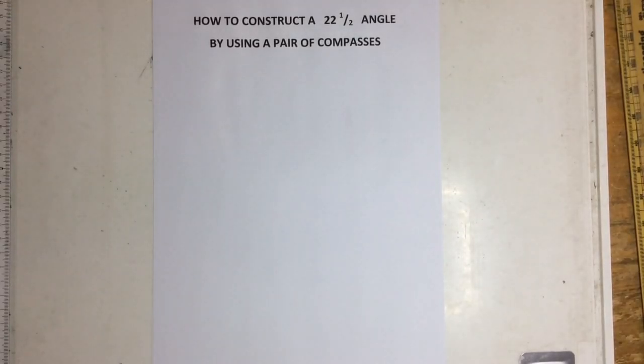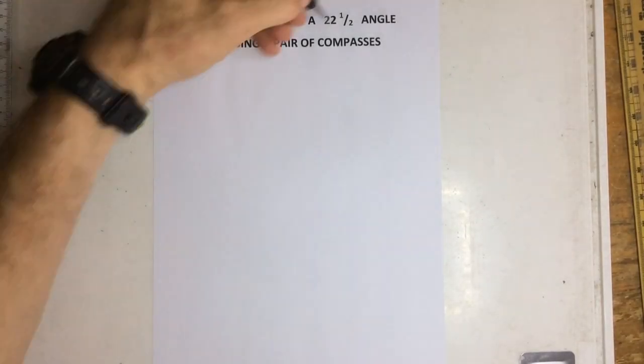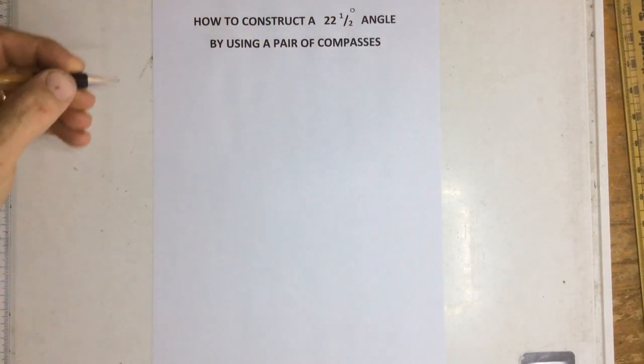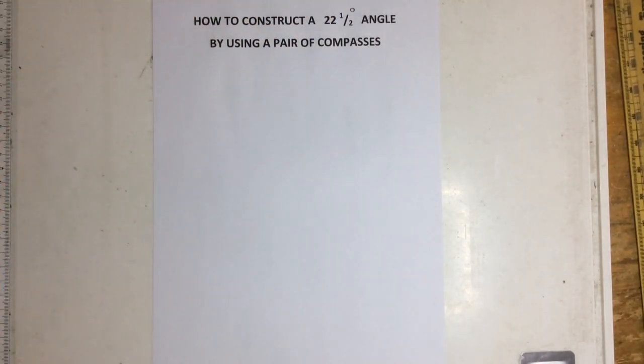Right, we're going to be constructing a 22 and a half degree angle, make sure you put that degree sign in there, by using a pair of compasses.